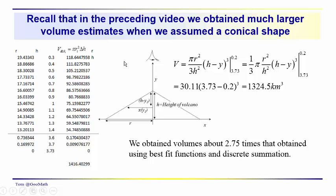So, as we mentioned, we're kind of tying back into the last video. We estimated volumes that varied between 1416 and 1324. So the volumes obtained from using, if you were to use this as an approximation, the volume that you would come up with would be about 2.75 times that using the best-fit function and discrete summation approaches. So not really a very good back of the envelope estimate for the volume of Mount Fuji.